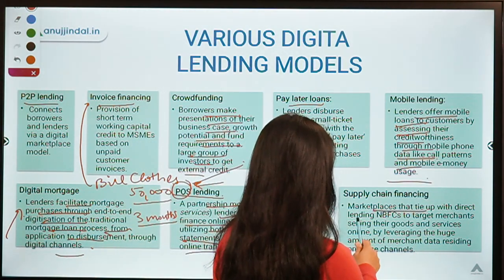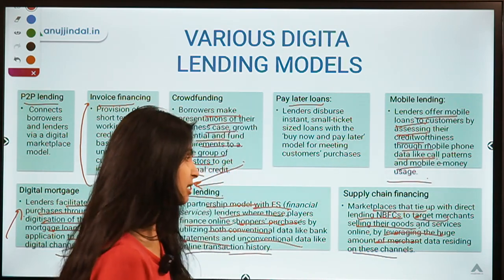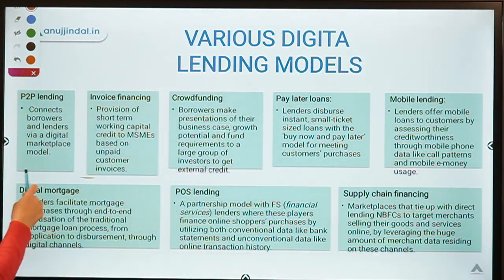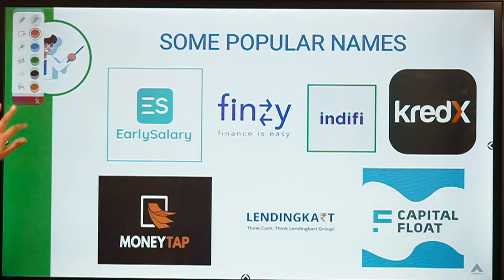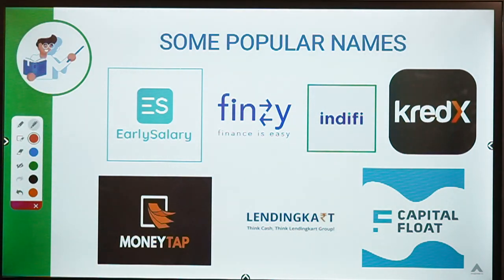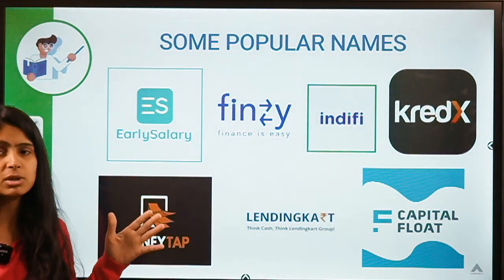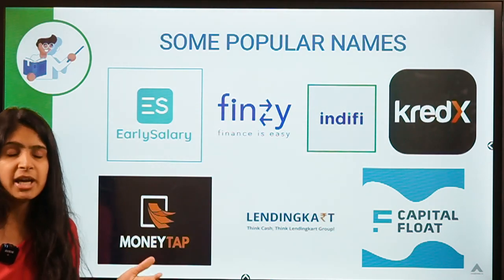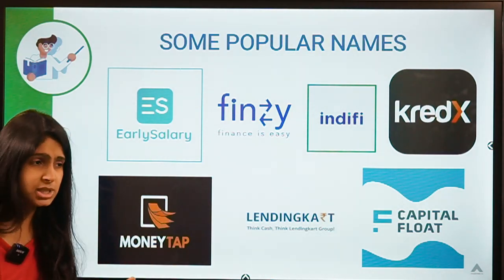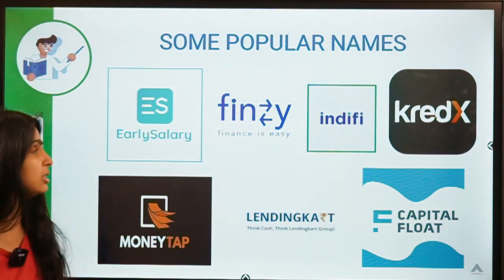Marketplaces tie up with direct lending NBFCs to target merchants selling their goods by leveraging huge amounts of merchant data. Some popular digital lending companies include LendingKart, Capital Float, and EarlySalary — which targets young customers earning more than 18,000 per month. Their average customer is about 26 years old, earning 30 to 40 thousand rupees per month — people not catered to by traditional banks.